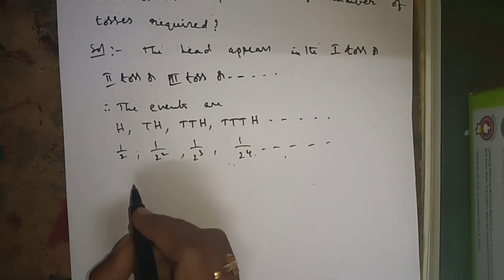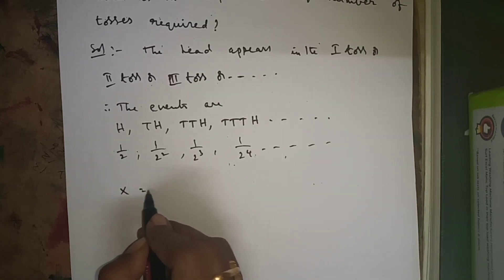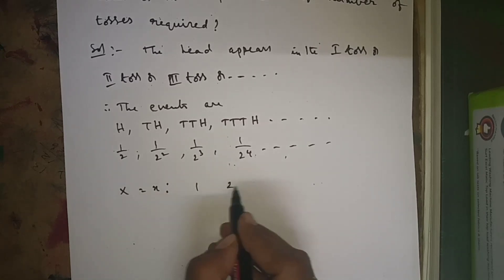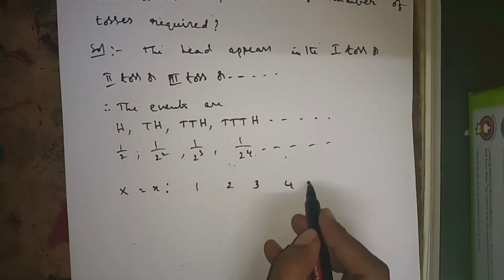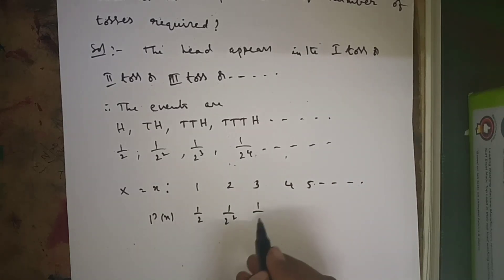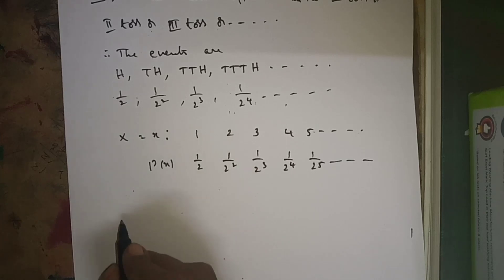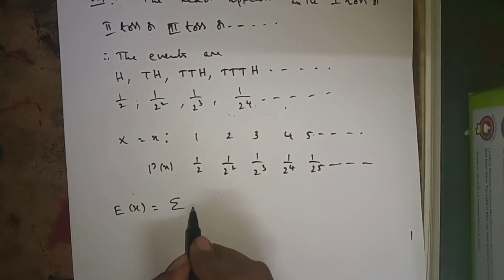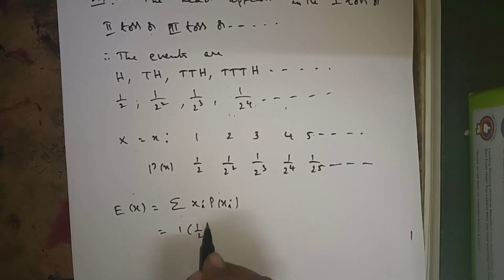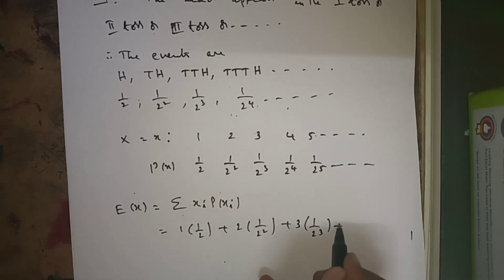So x = 1, 2, 3, 4, 5, 6, and so on. p(x) = 1/2, 1/2², 1/2³, 1/2⁴, 1/2⁵, and so on. Expected value E(x) = sigma xi into p(xi) = 1×(1/2) + 2×(1/2²) + 3×(1/2³) + and so on.